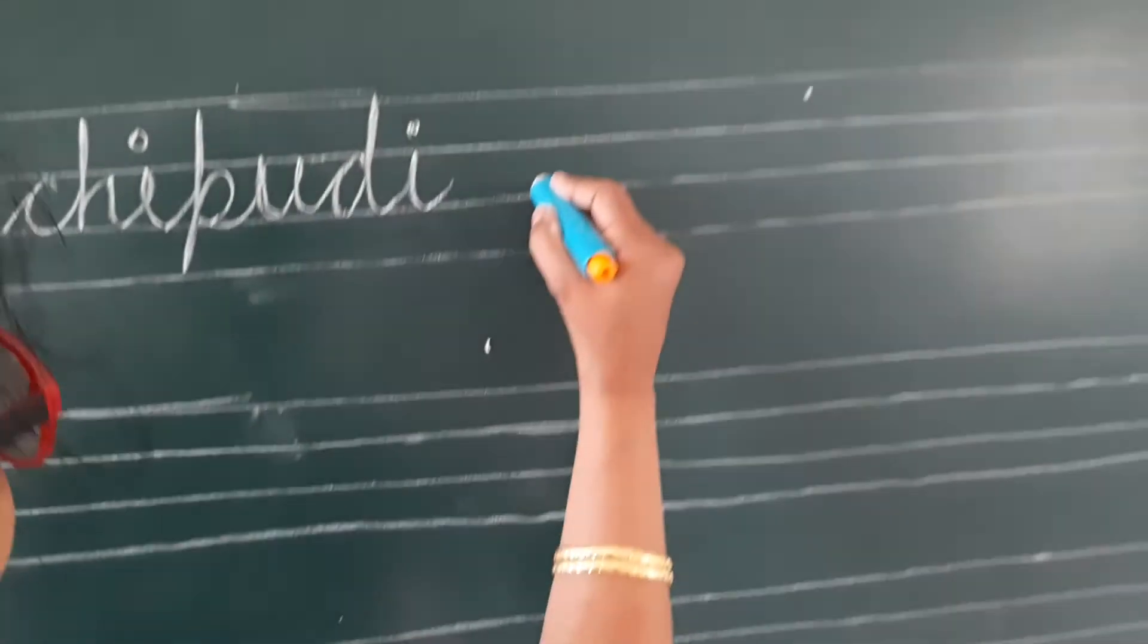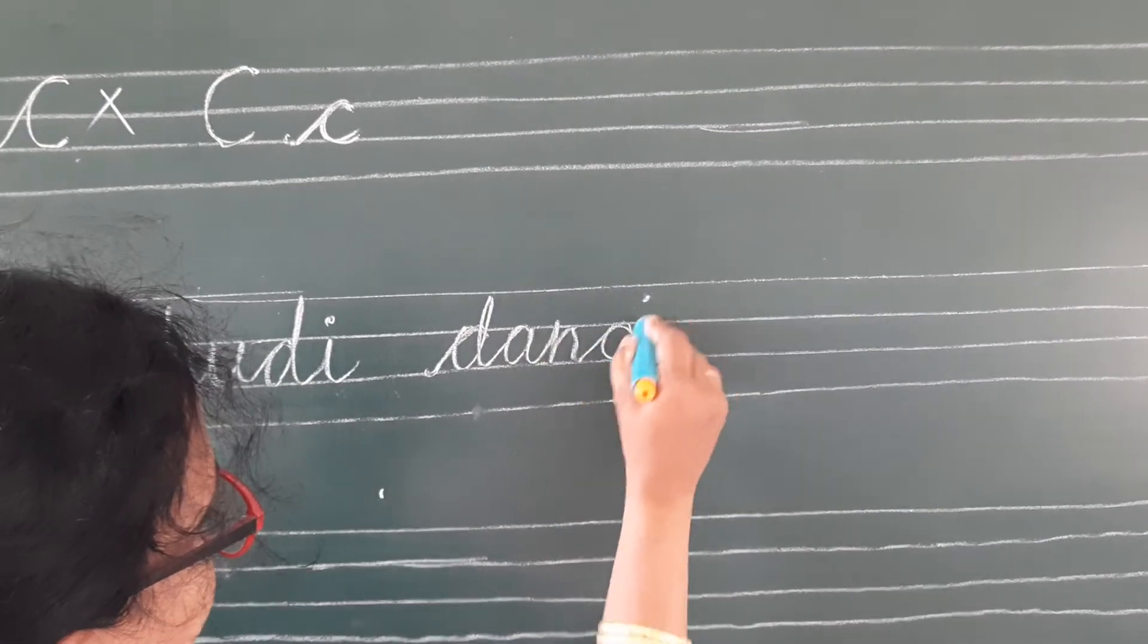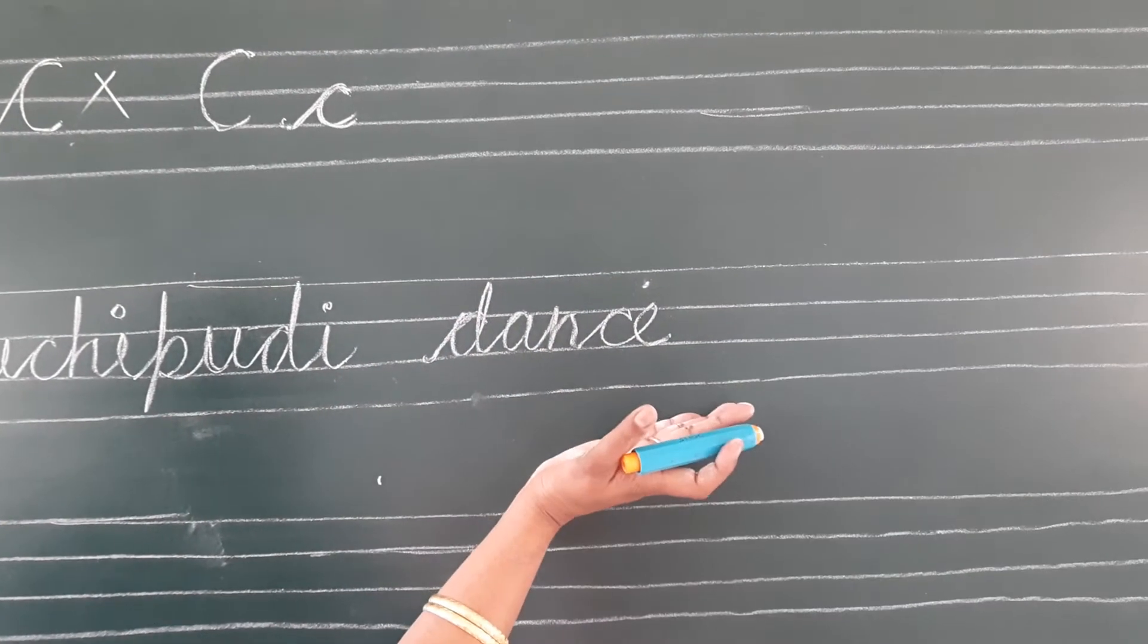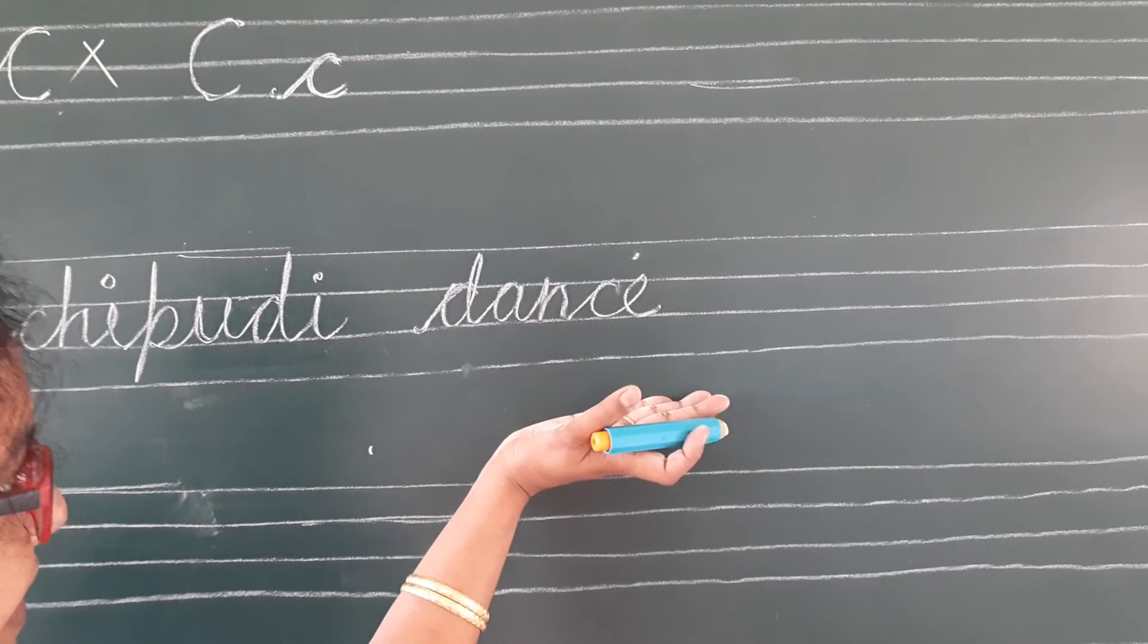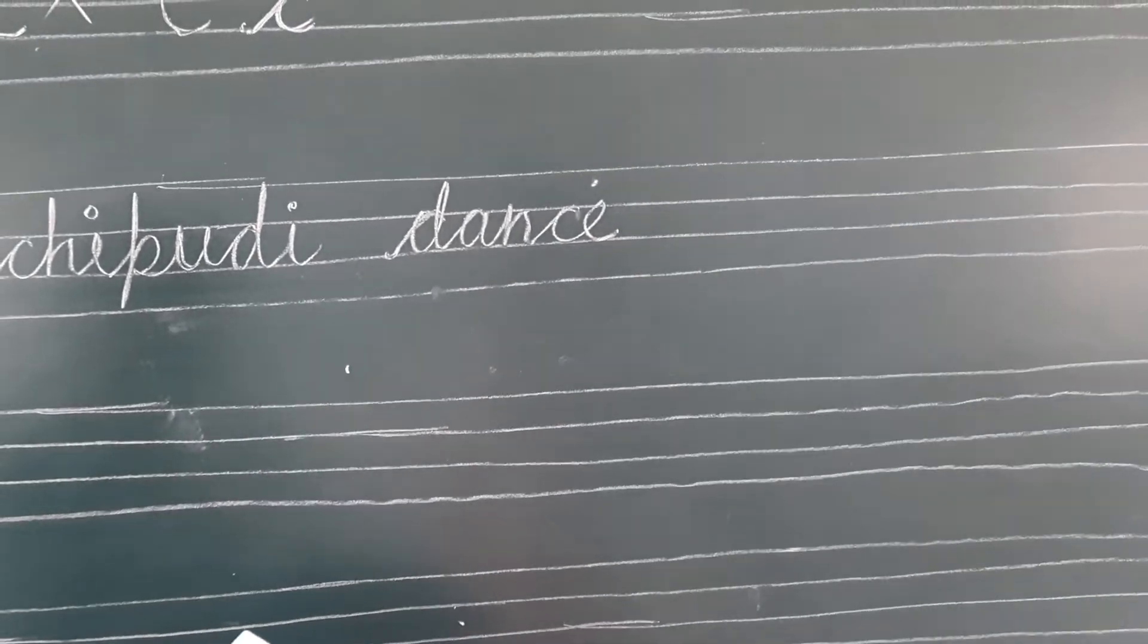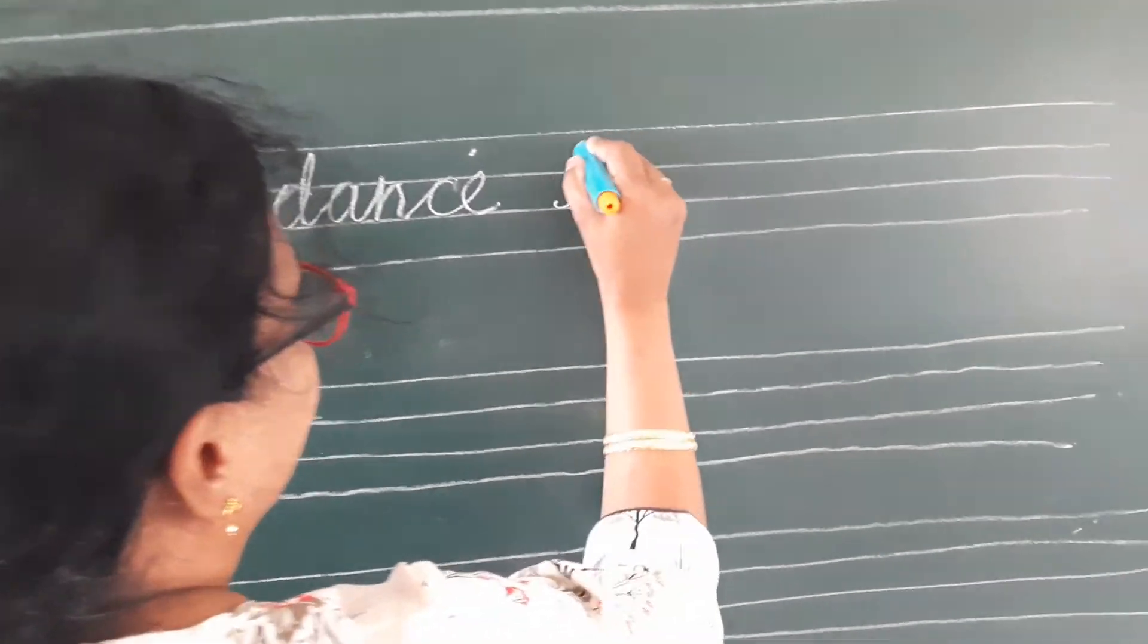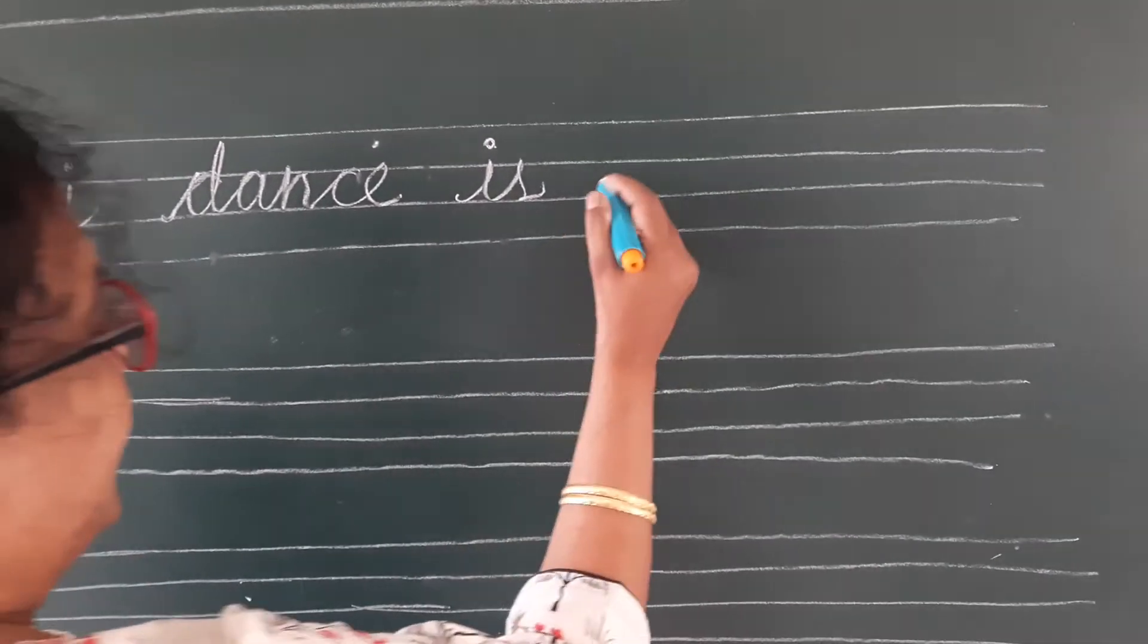Dance. Dance spelling: start with a stroke, D-A-N-C-E. I said already, children, you have to slant towards the right. Your handwriting should be towards the right. Don't slant to the left side, only you have to write to the right side. Dance I-S. Maintain finger space while you are writing. Please maintain finger space.